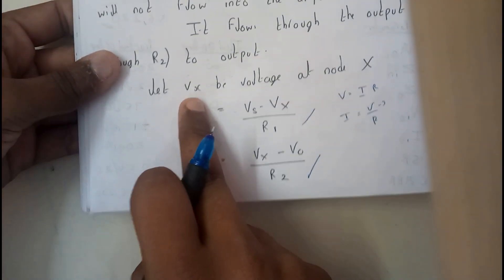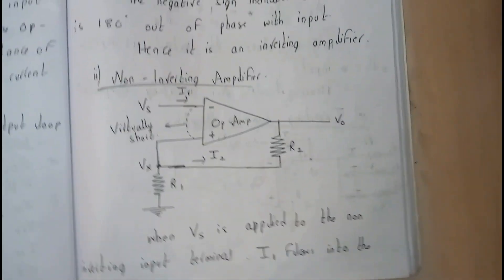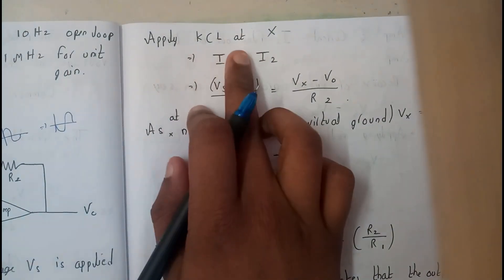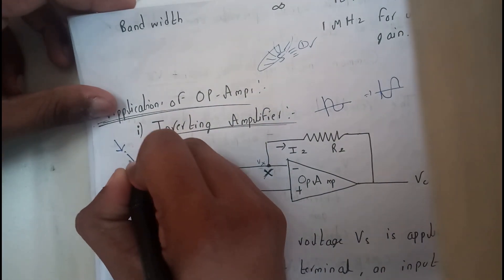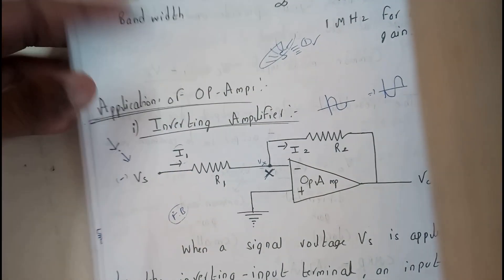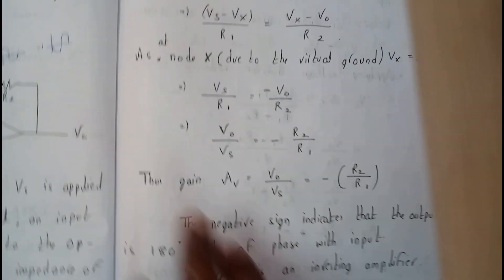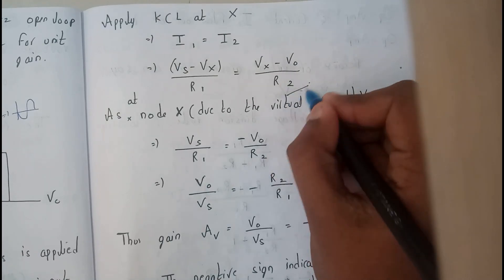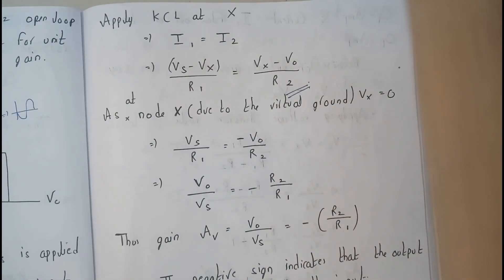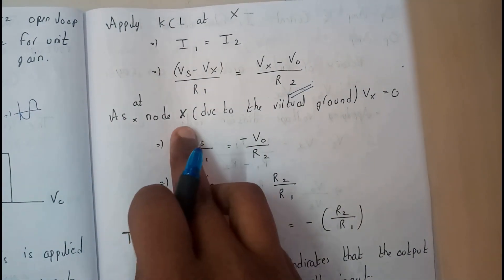Moving on, we apply KCL at node X. KCL states that the number of currents entering a point equals the number of currents leaving that point. Here, I1 is the entering current and I2 is the leaving current, so I1 equals I2. Substituting, we get (VS − VX) / R1 = (VX − V-naught) / R2.